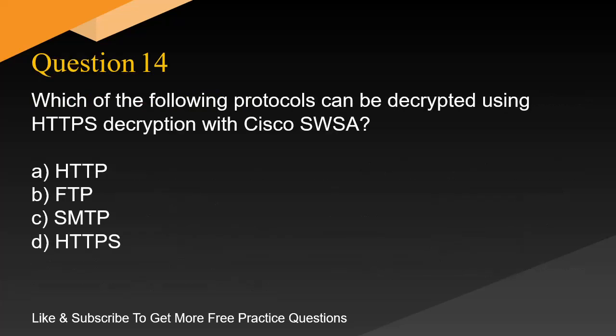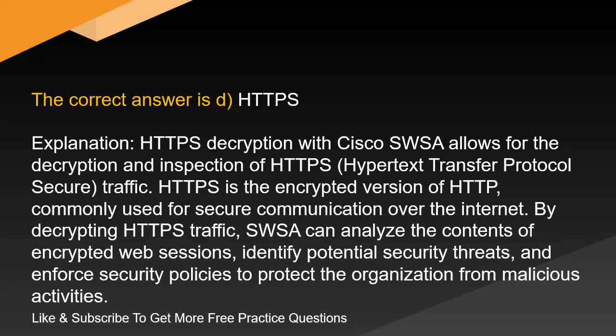Question 14. Which of the following protocols can be decrypted using HTTPS decryption with Cisco SWSA? A. HTTP. B. FTP. C. SMTP. D. HTTPS. The correct answer is D. HTTPS. Explanation. HTTPS decryption with Cisco SWSA allows for the decryption and inspection of HTTPS (Hypertext Transfer Protocol Secure) traffic. HTTPS is the encrypted version of HTTP, commonly used for secure communication over the Internet. By decrypting HTTPS traffic, SWSA can analyze the contents of encrypted web sessions, identify potential security threats, and enforce security policies to protect the organization from malicious activities.